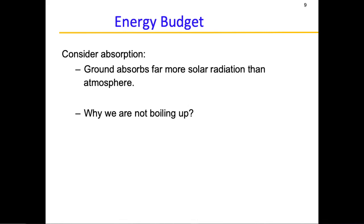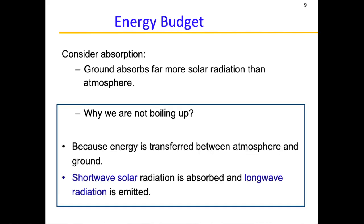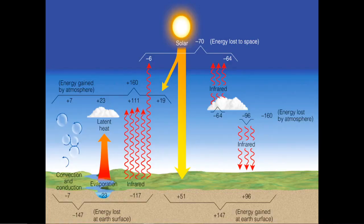The question is: why aren't we boiling? If you step onto the earth's surface, it should be boiling because you get a lot of heat. The reason is that energy is continuously being transferred from the ground to the atmosphere — whatever is at higher energy tries to release energy to a lower energy region. The energy is received in short wave form from solar radiation, but then it is emitted in long wave form — the red arrows in the diagram represent infrared long wave radiations being radiated back from the ground.